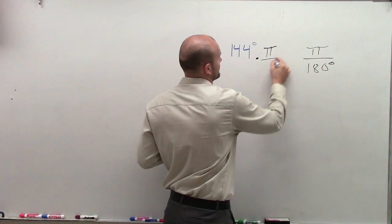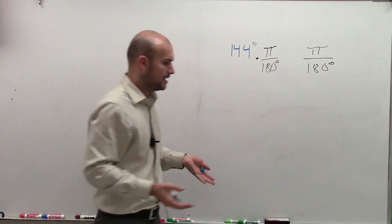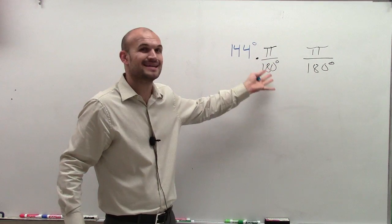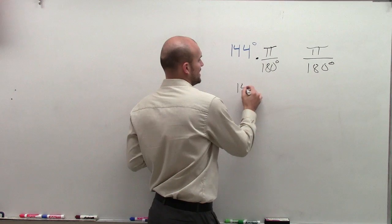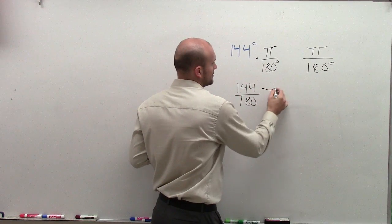So when I multiply pi over 180 degrees, since that's a ratio, what happens is the unit of degrees cancels out. So what I'll be left with is 144 over 180 pi.